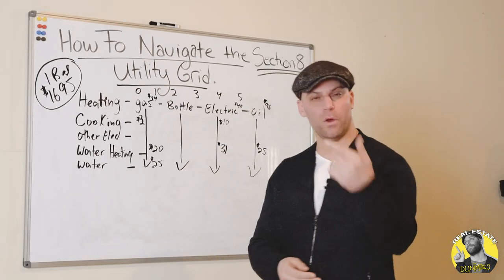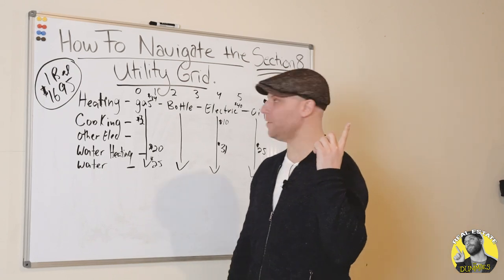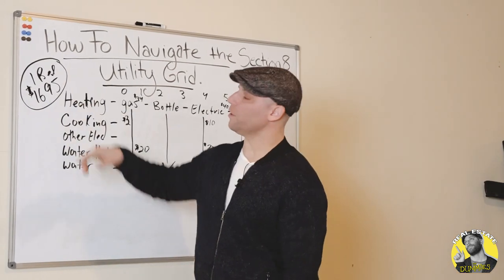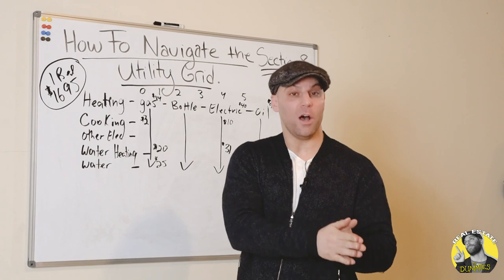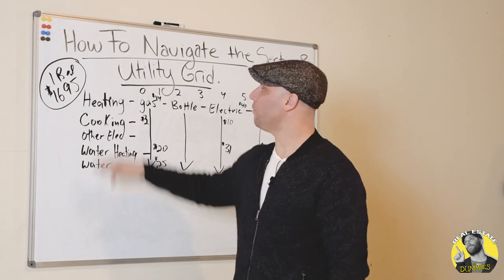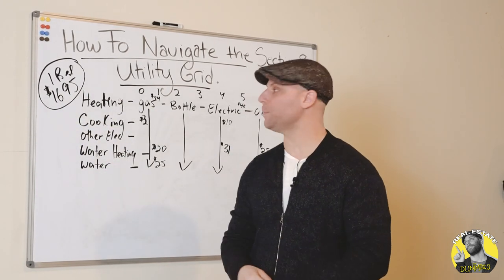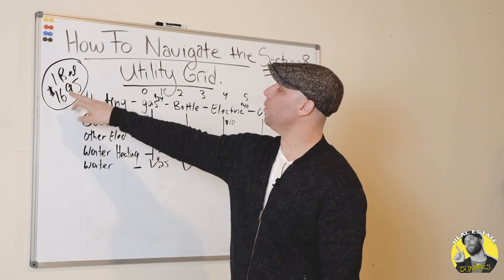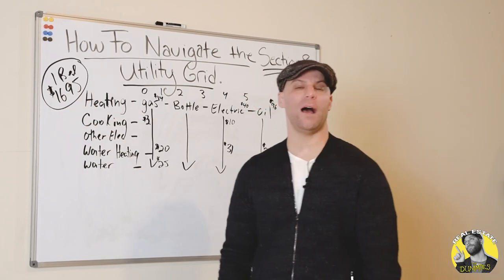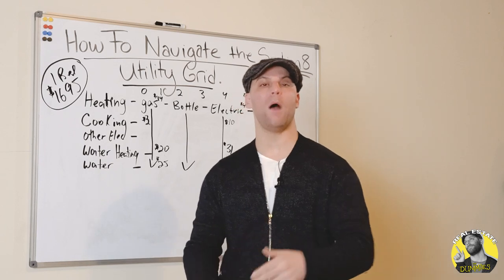As we've discussed in previous videos, FMR or Section 8 — the government HUD sets the rent. For a one-bedroom, in this particular example in Long Island, New York, it's $1,695 is what HUD pays for a one-bedroom.